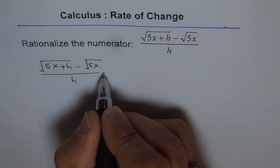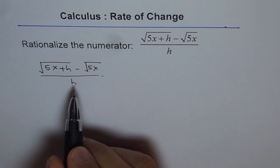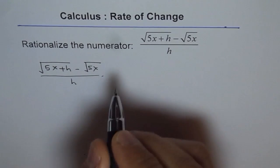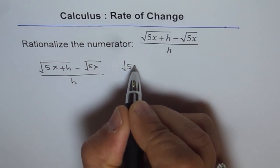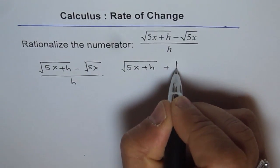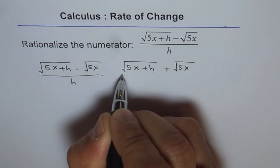Now to rationalize, we need to multiply by its conjugate and divide by the same term. So the conjugate is changing the sign. So we get square root of 5x plus h plus square root of 5x. So we change the sign, this becomes the conjugate.